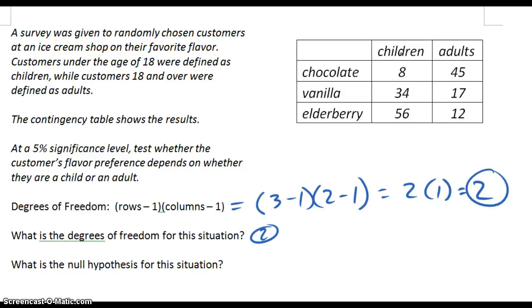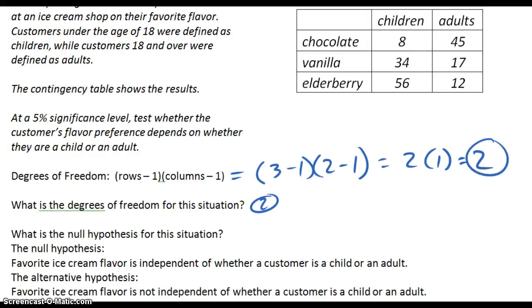So as you can see here, the null hypothesis is favorite ice cream flavor is independent of whether a customer is a child or an adult. It's independent. Whereas the alternative hypothesis is that favorite ice cream flavor is not independent of whether a customer is a child or an adult. That's how the null hypothesis works.